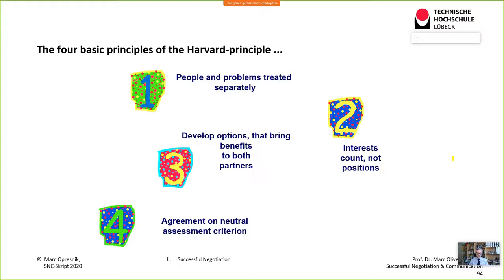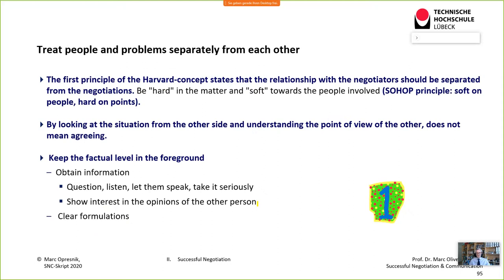The four famous principles of Harvard's Project on Negotiation at the Harvard Law School are: first, treat people and problems separately — the SOHO principle; second, interests count, not positions — as in the iceberg model and Watzlawick's second axiom that every communication has a content and relationship aspect; third, develop options that bring benefits to both parties; and fourth, agreement on mutual assessment criteria.